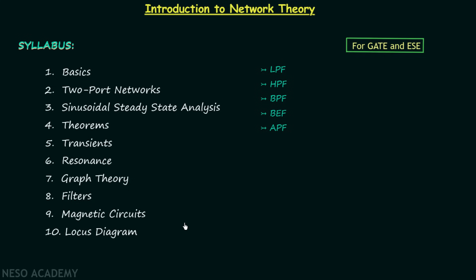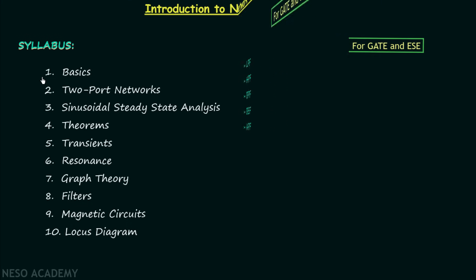In the locus diagram chapter, I will explain how we can trace the path formed by the tip of the current vector by varying any one circuit element or the frequency of the circuit. So this is all for the syllabus of network theory. I hope you will watch all the lectures in the proper sequence to avoid any confusion. From the next lecture we will start with the basics of network theory, which is chapter number 1. See you in the next one.